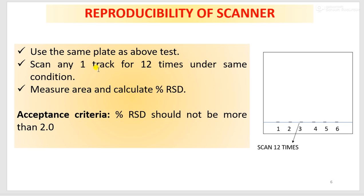Next parameter is reproducibility of scanner. You can use the same plate as the above test. You have to scan any one track for 12 times under the same conditions. In the diagram, track number 3 is scanned 12 times. You will get 12 values for area for the same track, and you have to find out percentage RSD of those 12 values. It should not be more than 2%.